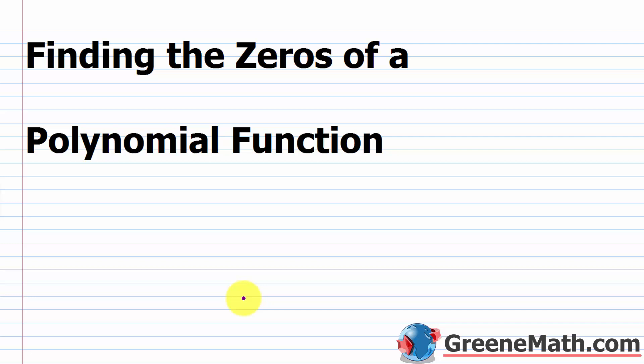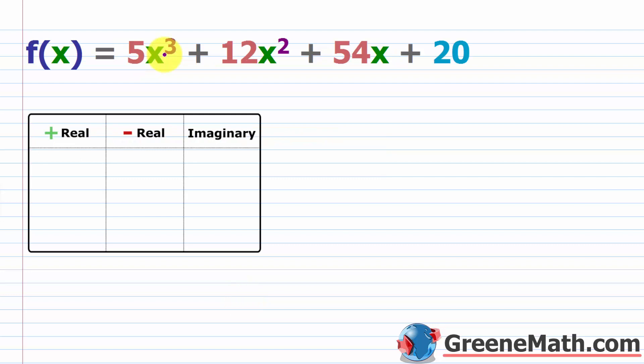In this lesson, we want to talk about finding the zeros of a polynomial function. Now it's time to take all the things we've been talking about over the last few lessons and apply it to a real world example. We have f of x equals 5x cubed plus 12x squared plus 54x plus 20. If you got this problem on your test and your teacher said, find the zeros for this polynomial function, what would you do?